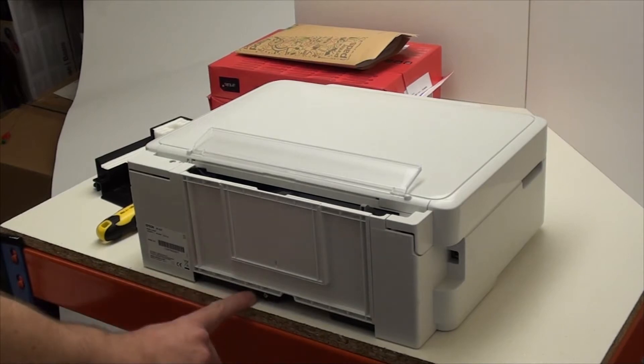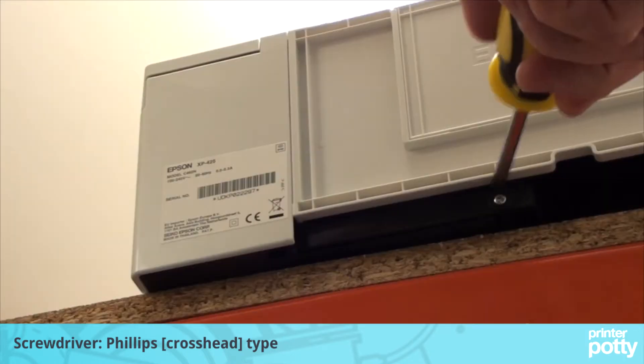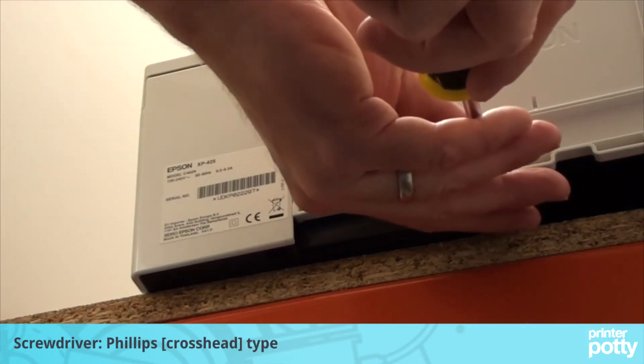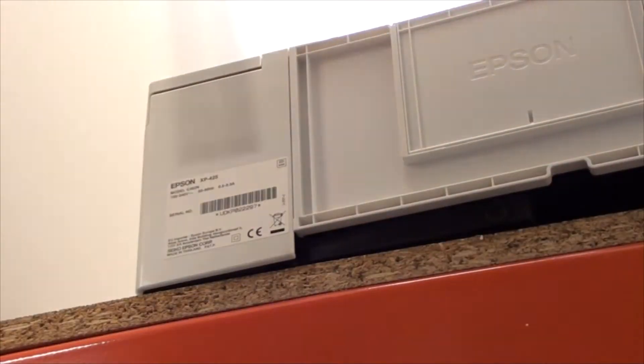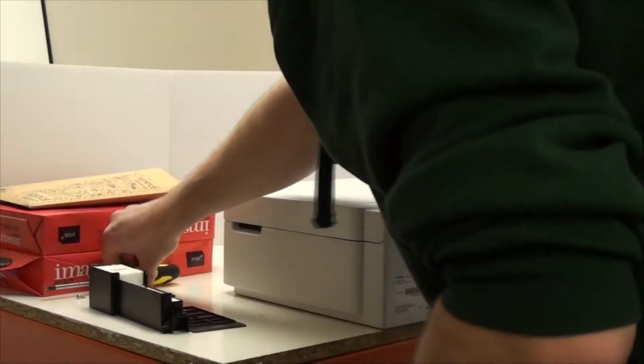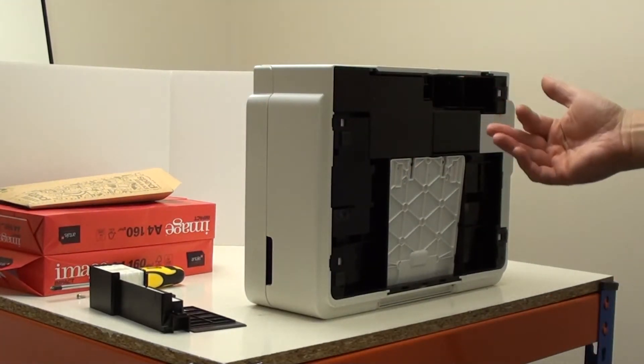Turn the printer around. There is a screw located just here. Remove that screw and put it somewhere safe. Once you've removed the screw, you can then turn the printer onto its front.